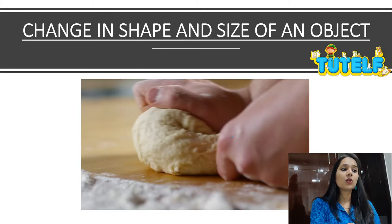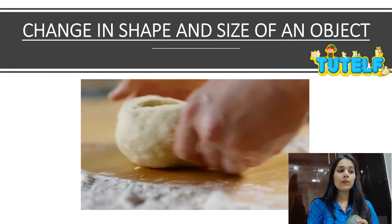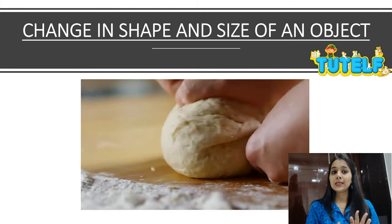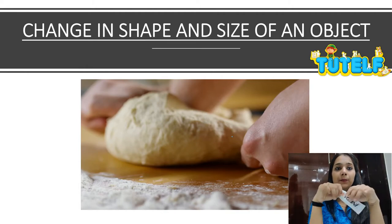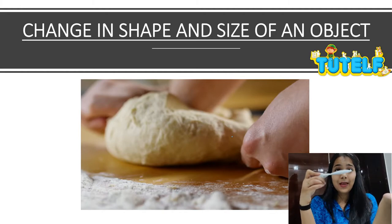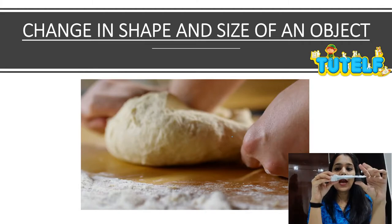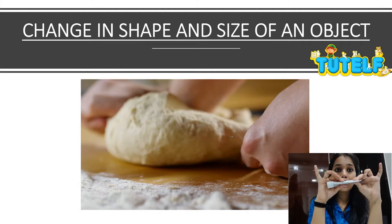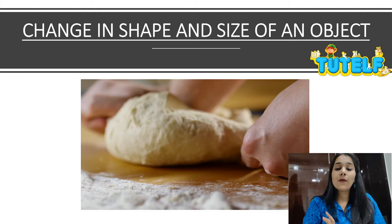Next is change in the shape and size of an object. On the screen you can see a person playing with dough — in the process, the shape and size of the dough is changing continuously. I have an ointment tube here with a certain shape. As I apply force to it, the ointment shifts to one side, and the shape of the tube keeps changing as I keep applying force. Similarly, the shape of the dough on screen is changing.